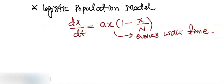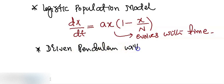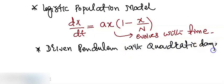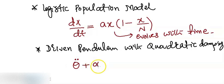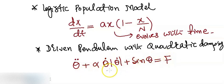We can also look at a couple more examples. For example, we can have a driven pendulum with quadratic damping, given by theta double-dot plus alpha times theta-dot times absolute of theta-dot plus sine of theta equals f. You can see that this is also depending on time.